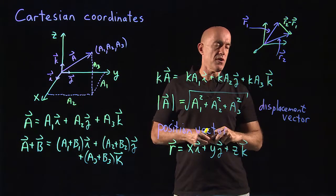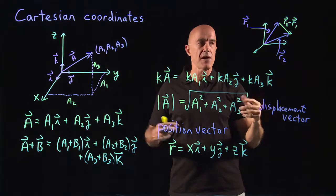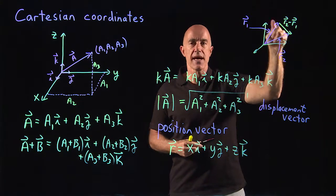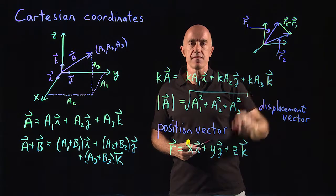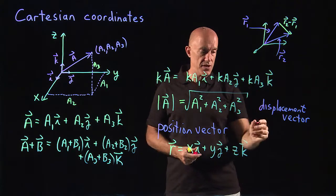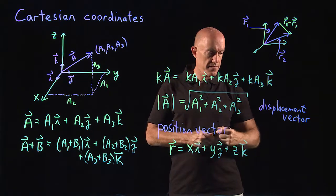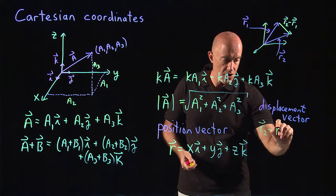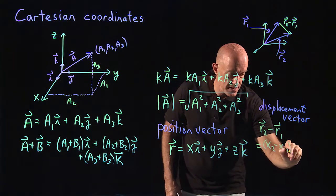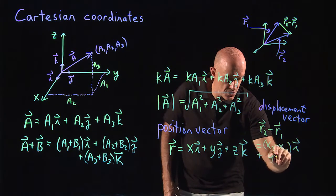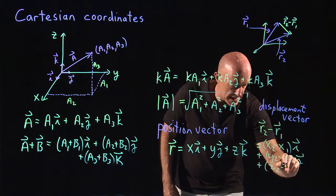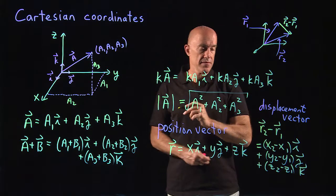And it can be very useful because say you have a physical problem. Maybe you have two masses, one at position r1, the other at position r2. The force between the masses depends on the vector that's pointing from one mass to another mass. So you need to use the displacement vector. The displacement vector is simple to write. So r2 minus r1 will just be (x2 minus x1) times i plus (y2 minus y1) times j plus (z2 minus z1) times k.